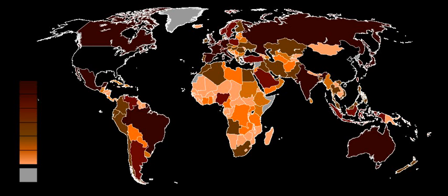GDP can be contrasted with gross national product, or as it is now known, gross national income. The difference is that GDP defines its scope according to location, while GNI defines its scope according to ownership. In a global context, world GDP and world GNI are equivalent terms. GDP is product produced within a country's borders; GNI is product produced by enterprises owned by a country's citizens. In practice, foreign ownership makes GDP and GNI non-identical.